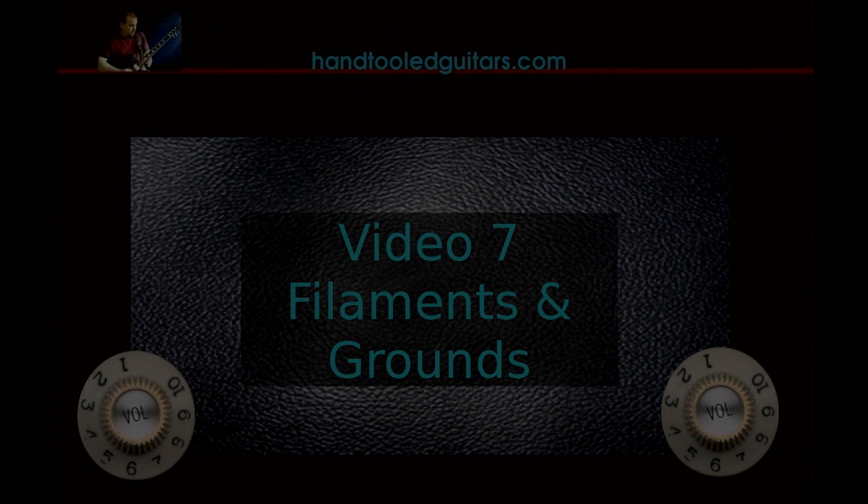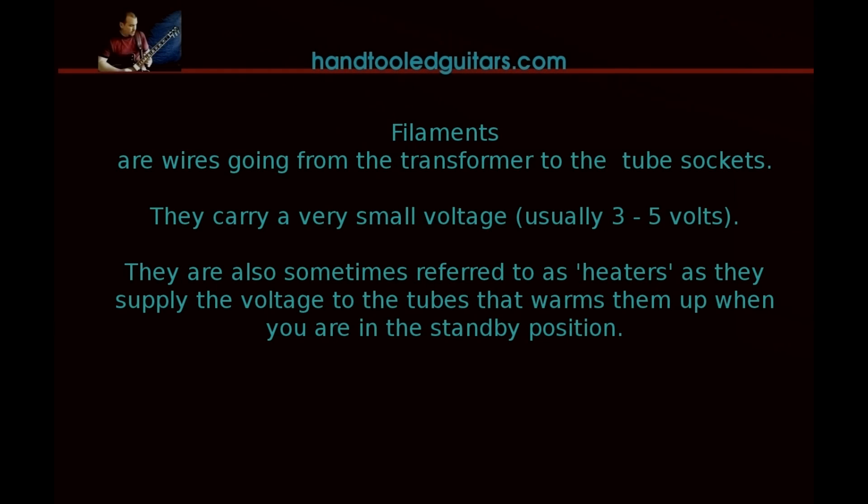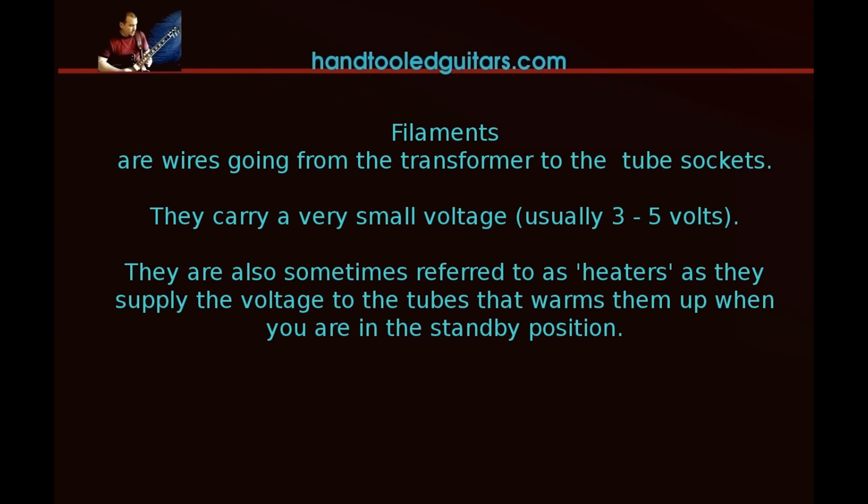Now we're going to move on to the filaments and grounds. Filaments are wires going from the transformer to the tube sockets. They're often referred to as heaters. They carry a really small voltage and they're what you see glowing when the tubes come on.